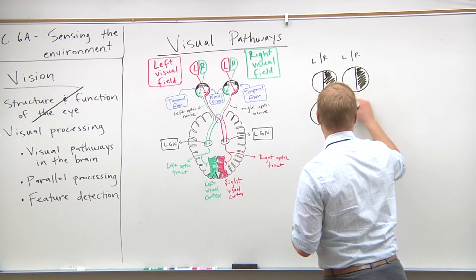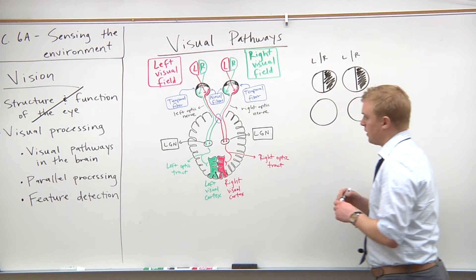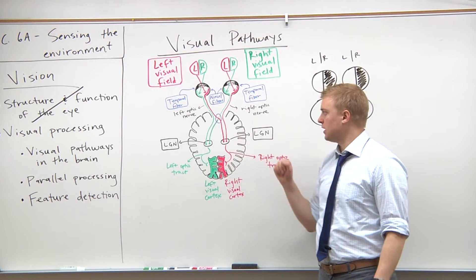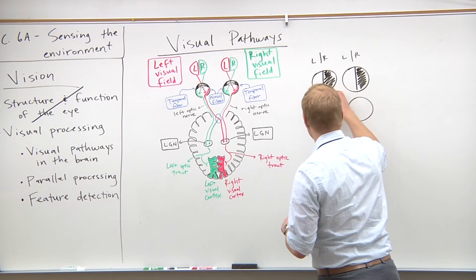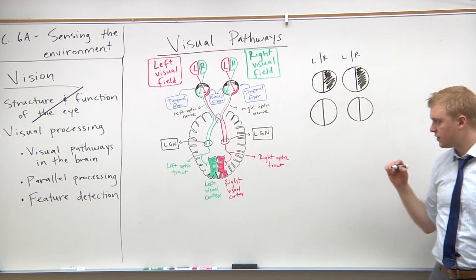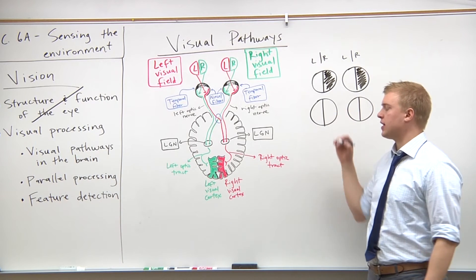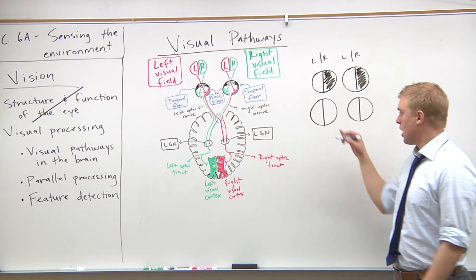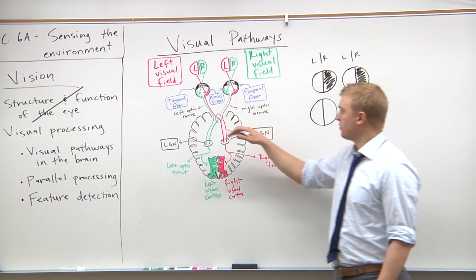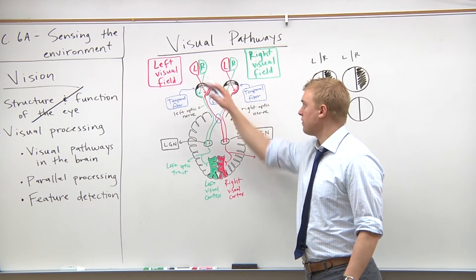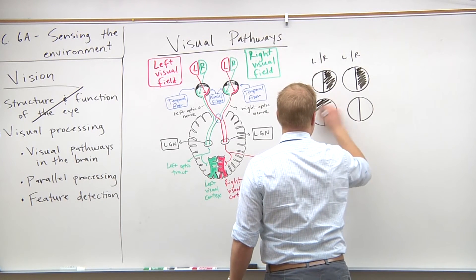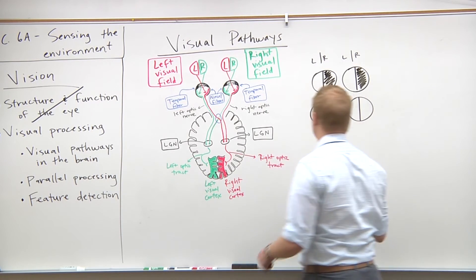If we cut the left optic nerve in half, how would that affect our right eye? You would still see out of the right eye. How about the left eye? No. How about from either the left or right visual field of the left eye? No — because you have a left and a right visual field, but if you cut that whole nerve in half, you would lose sight in both fields of the left eye.